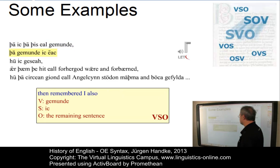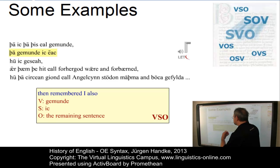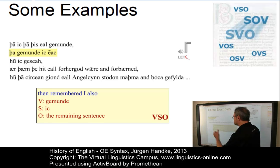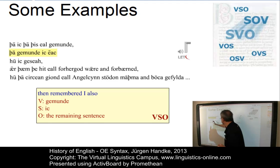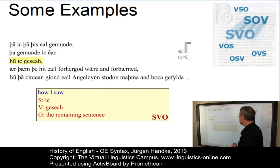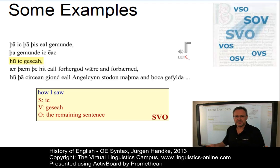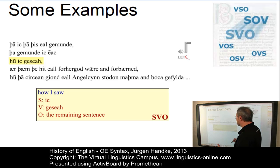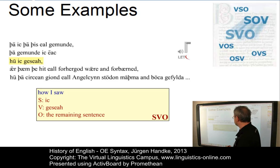The second sentence of the passage exhibits a VSO structure, which is quite typical if an adverbial — in this case 'tha' meaning 'then' — precedes. The third sentence shows an SV structure with the object not part of this clause, but rather consisting of the remaining passage of the text — so the object consists of two clauses.